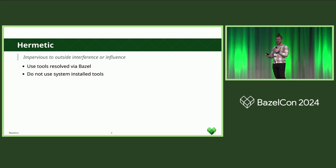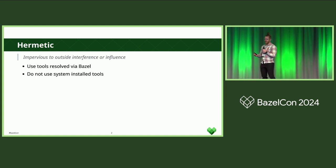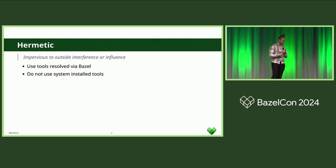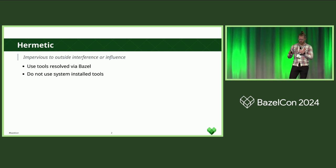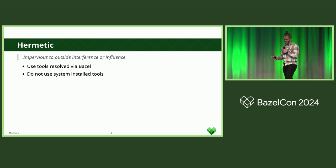Someone comes to you and says there is this tool, we want to create a rule set around it, and then you realize that tool is written in Go, and they produce pre-built static linked binaries for Mac, Windows, and Linux. You build a rule set around it, you use the download in Bazel to get it, and everything is good — really easy, nice and easy, very good, all hermetic.